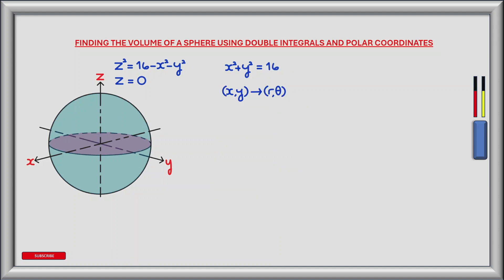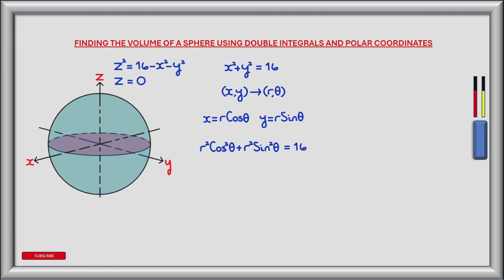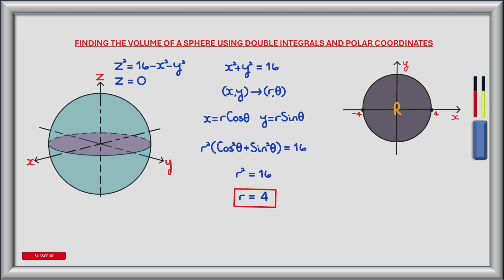To convert this equation from Cartesian coordinates to polar coordinates, we let x equal r cos theta and y equal r sin theta. Making the substitution gives r squared cos squared theta plus r squared sin squared theta equals 16. Factoring out r squared and applying the identity cos squared theta plus sin squared theta equals 1, we get r squared equals 16, so r equals 4. I've sketched the region of intersection on the whiteboard — it's a circle with radius 4.